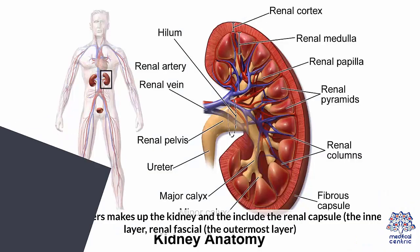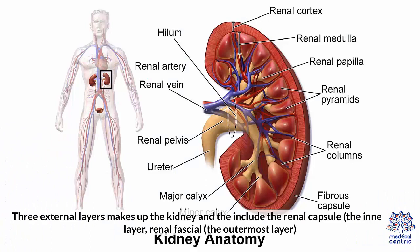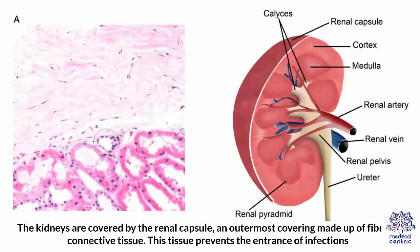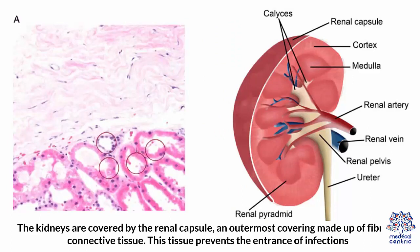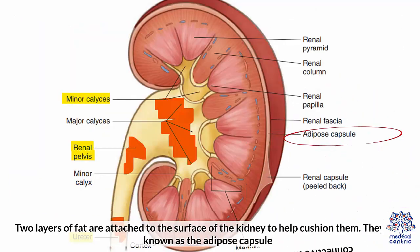Anatomy. Three external layers make up the kidney, and they include the renal capsule and renal fascia. In the outermost layer, the kidneys are covered by the renal capsule, an outermost covering made up of fibrous connective tissue. This tissue prevents the entrance of infections. Two layers of fat, known as the adipose capsule, are attached to the surface of the kidney to help cushion them.